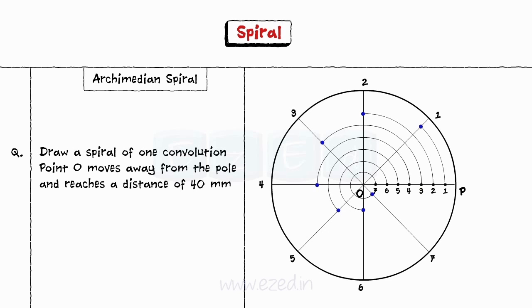Step 4. From the given points, draw a smooth curve. This is the required spiral.